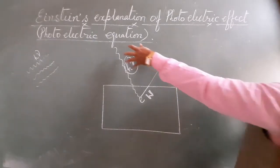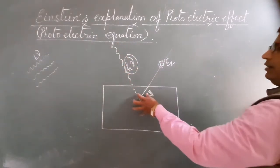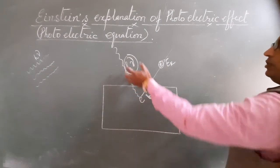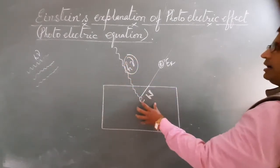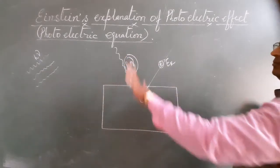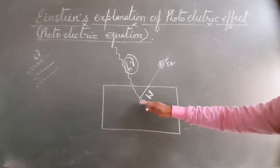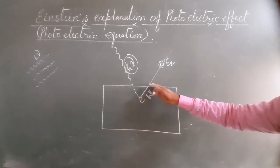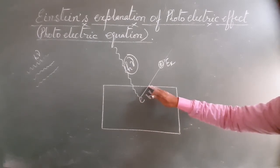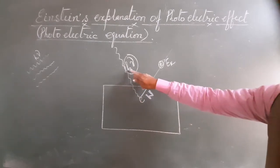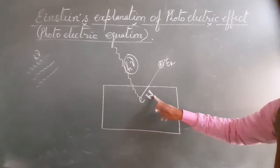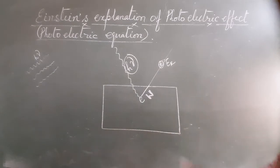The photon's energy is h nu incident. One electron will be transferred its total energy. This energy will be used by electron in two parts. If energy h nu is less than w, work function, then there will be no emission of photoelectron.